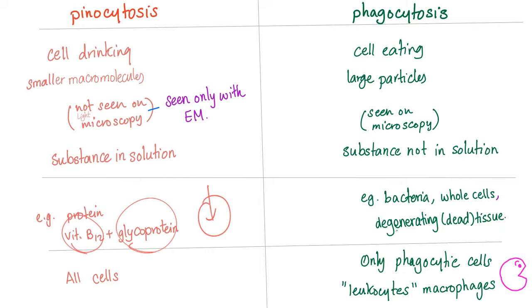Who performs pinocytosis? All cells. Who performs phagocytosis? Only certain cells called phagocytic cells, such as some leukocytes — your white blood cells — and macrophages, which are monocytes in the tissue.